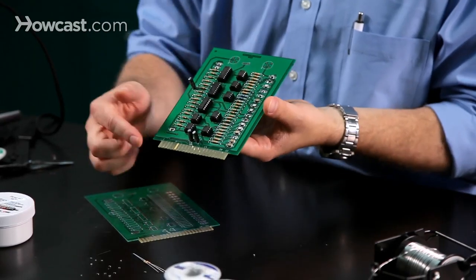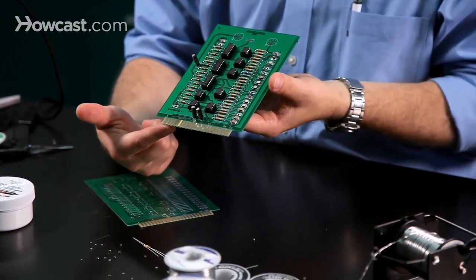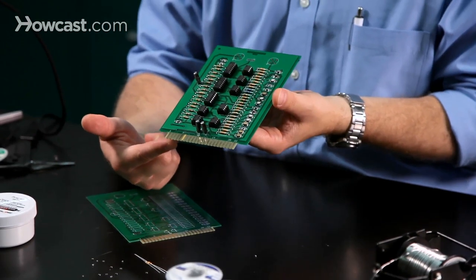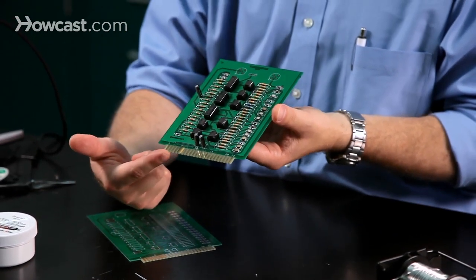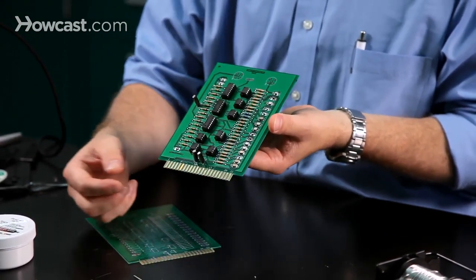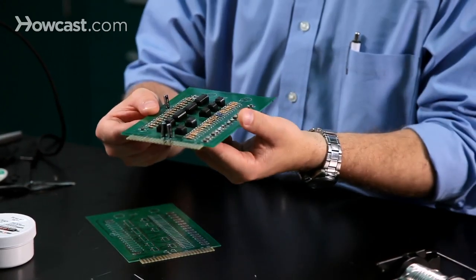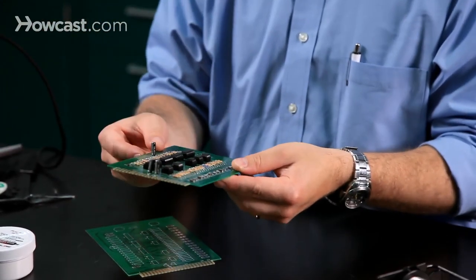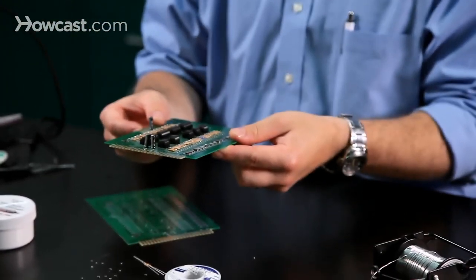Some printed circuit boards also have an area made to connect to external circuits. In this case, we have an edge connector, which has gold-plated fingers, which are designed to connect with a connector and attach to other parts of the circuit.